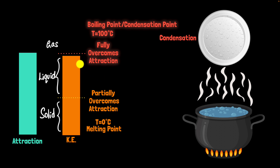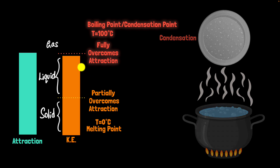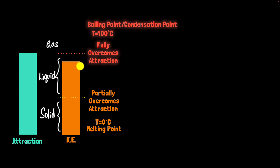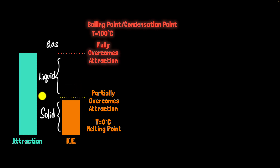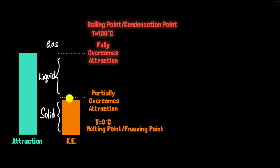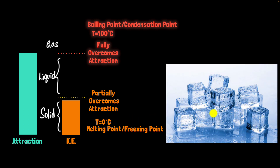And what happens if we reduce the temperature even more? The kinetic energy will keep reducing, and when it's below the melting point, it will no longer be able to overcome any force of attraction, which means the liquid will turn back into solid. We call this the freezing point. And you can see the freezing point is the same as the melting point. Therefore, when liquid water is below zero degrees Celsius, it freezes into ice.